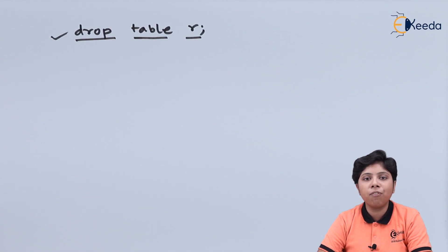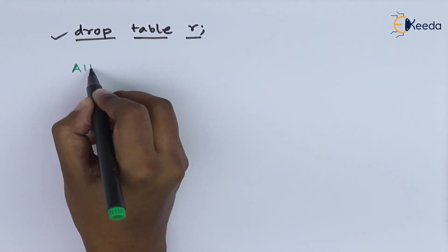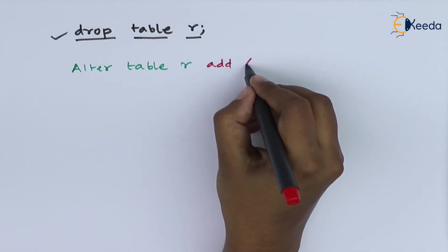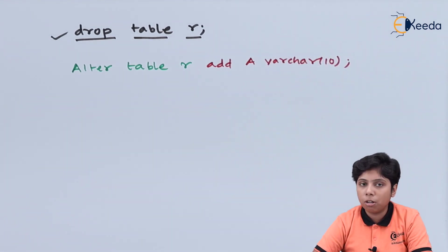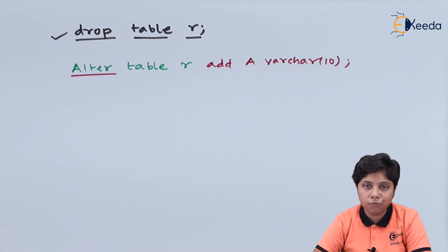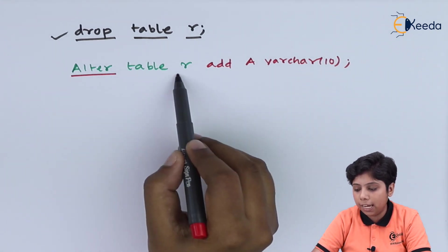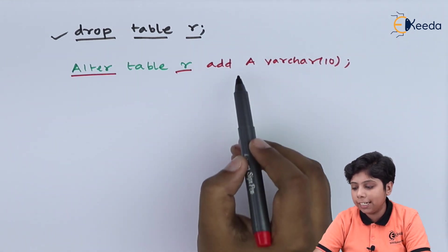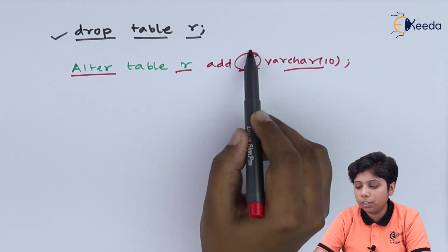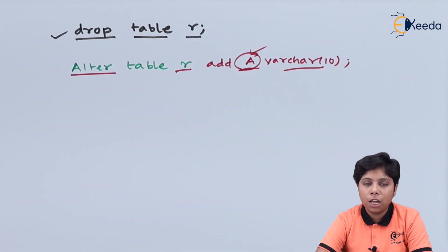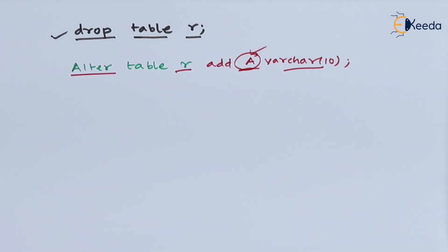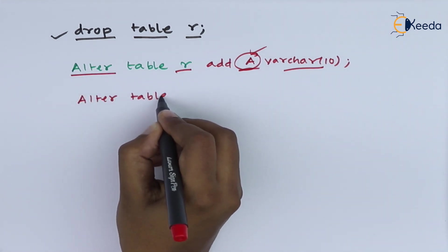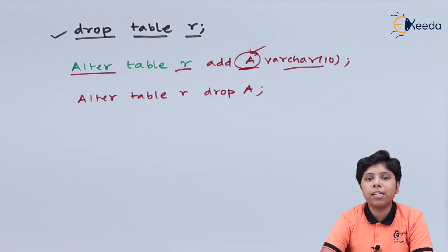We can also modify or update a table schema using the ALTER command. For example, ALTER TABLE r ADD a VARCHAR(10) adds an attribute 'a' with data type VARCHAR(10) to relation r. We can also drop an attribute using ALTER TABLE r DROP a, which removes attribute 'a' from the table. In this way, we can add or drop attributes from a table schema.